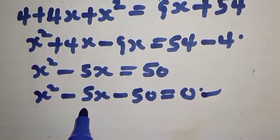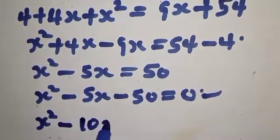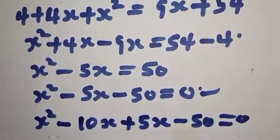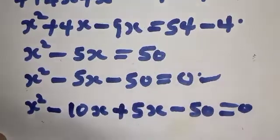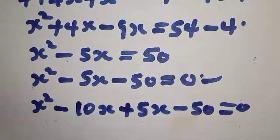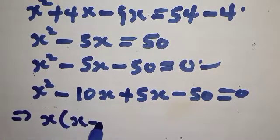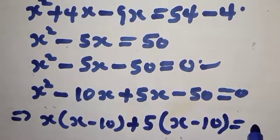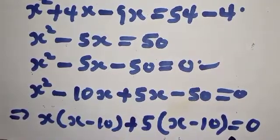Factoring the quadratic: X squared minus 5X minus 50 equals 0 can be written as X squared minus 10X plus 5X minus 50 equals 0. Because minus 10 times 5 is minus 50, and minus 10 plus 5 gives minus 5. Factoring: X(X minus 10) plus 5(X minus 10) equals 0, which gives (X plus 5)(X minus 10) equals 0.